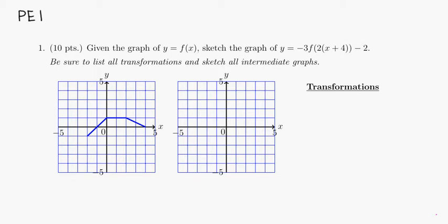Let's look at practice exam one, problem number one. The graph of f(x) is given, and we want to sketch the graph of y equals negative 3 times f of 2 times the quantity x plus 4, minus 2. There are a whole bunch of transformations there.